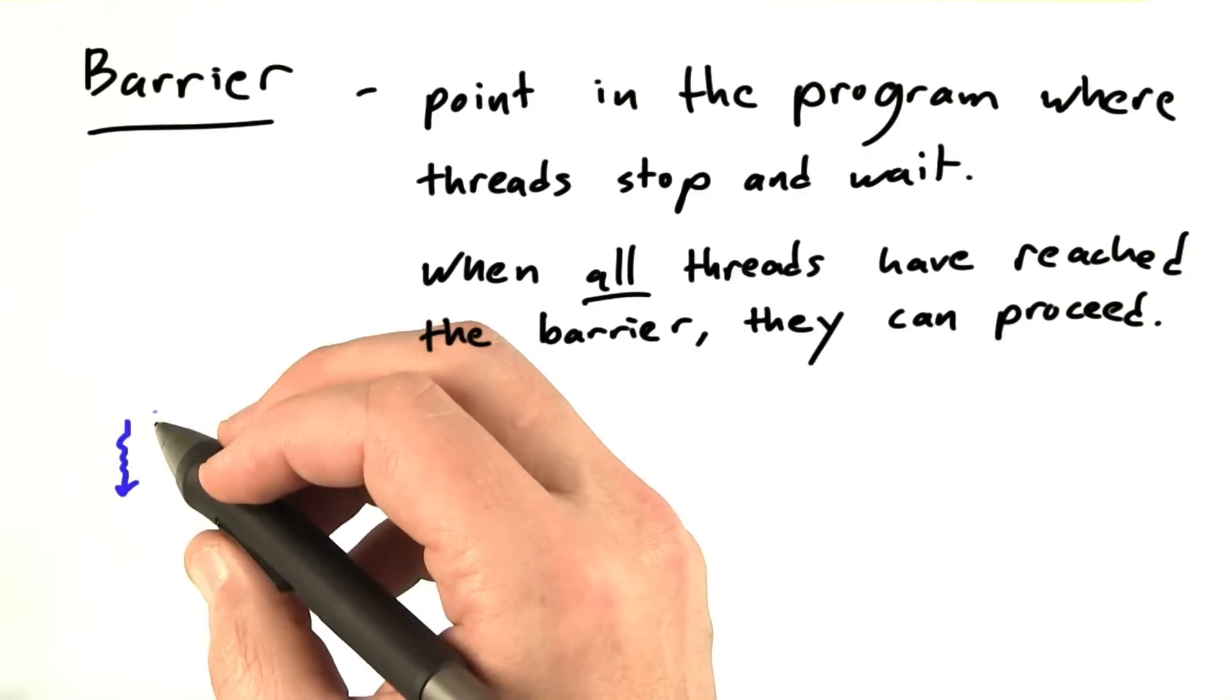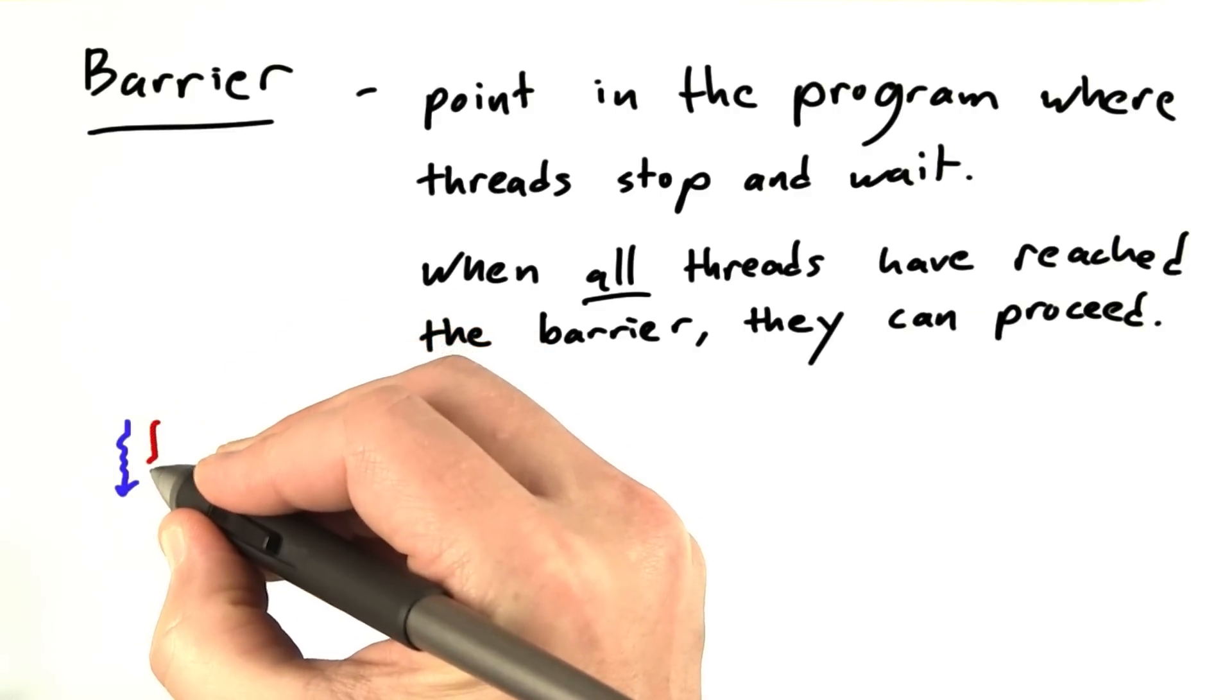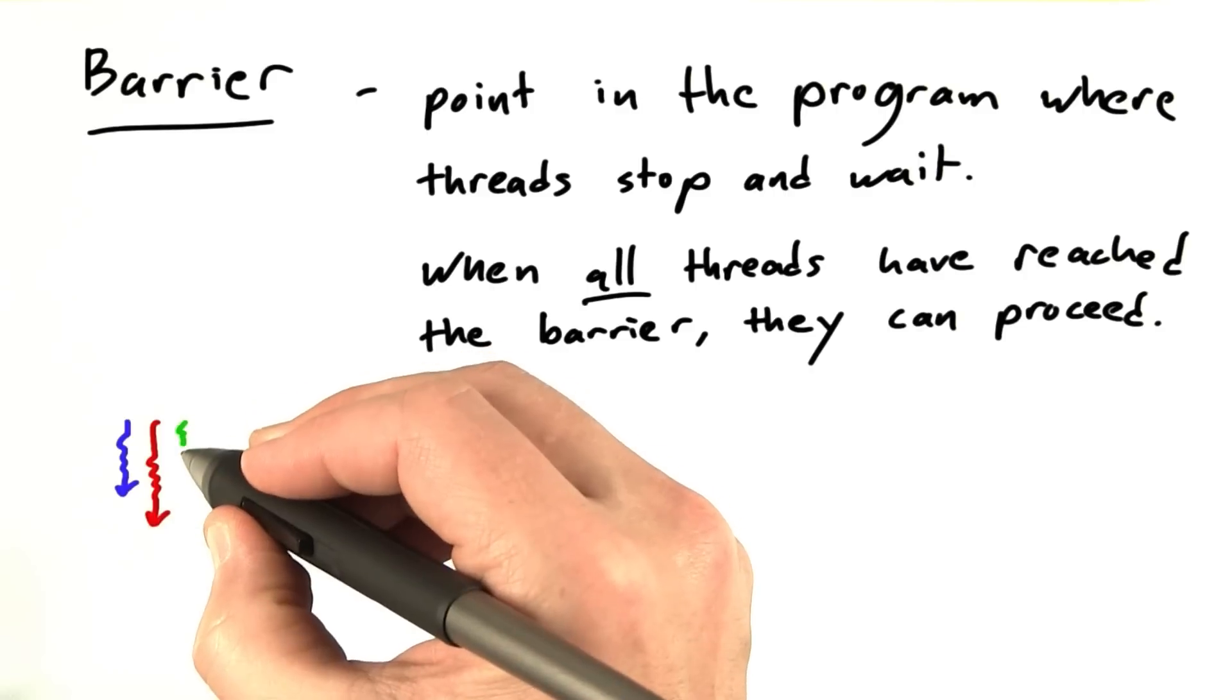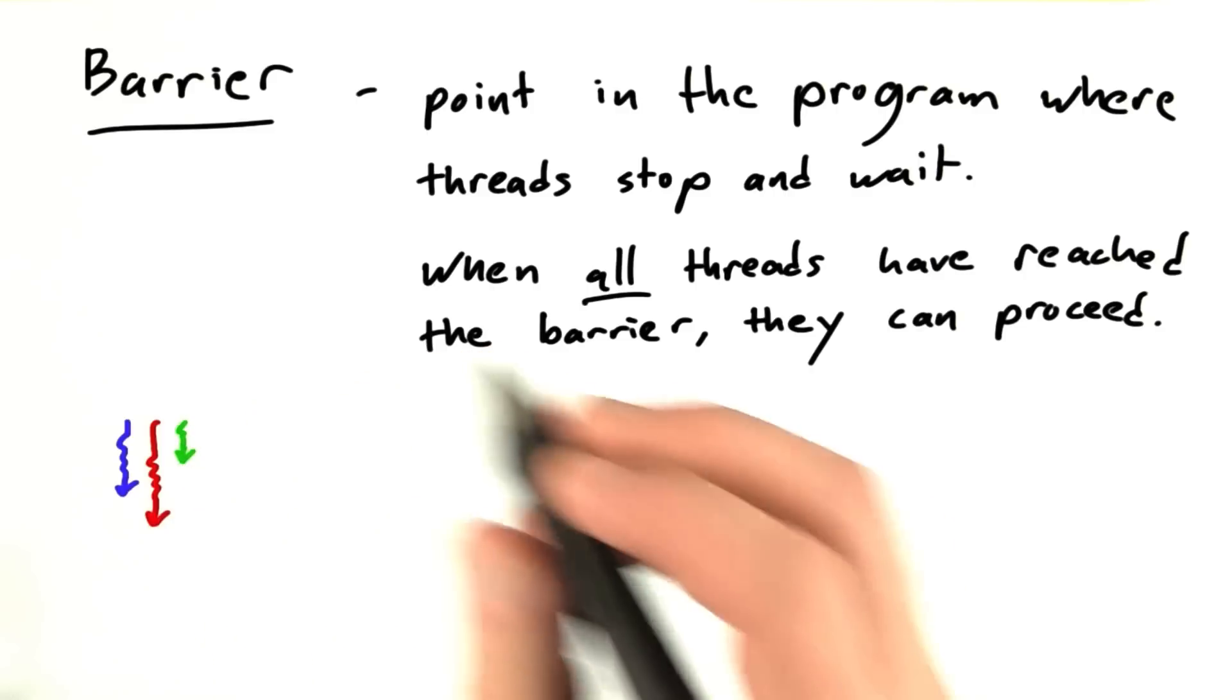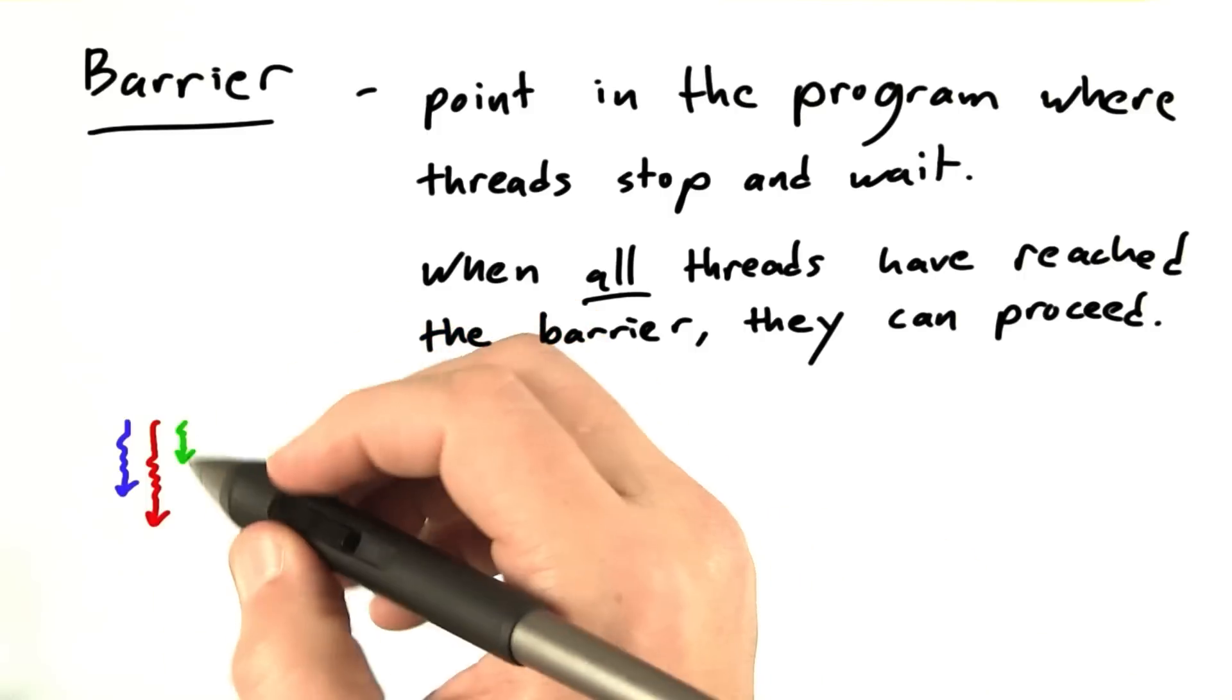Let's illustrate this. Here's some threads and they're all proceeding along through the code. I'll draw them in different colors. And I'm also drawing them different lengths, so that you get the idea that they're at different places in the code. They're at different points in their execution of the program.